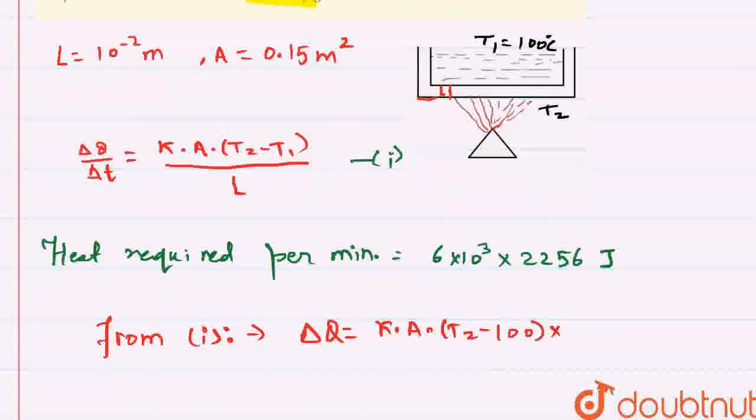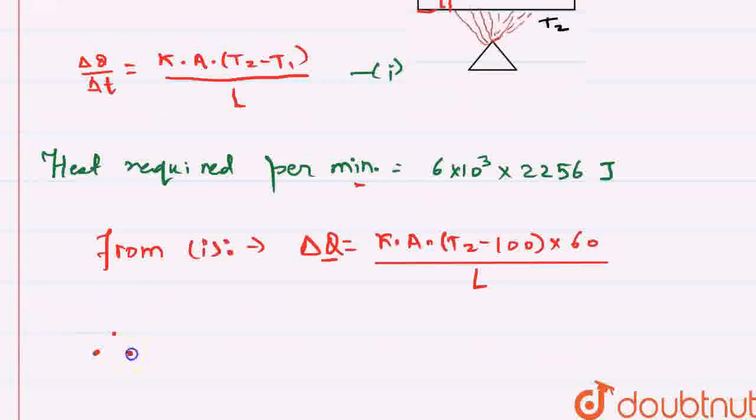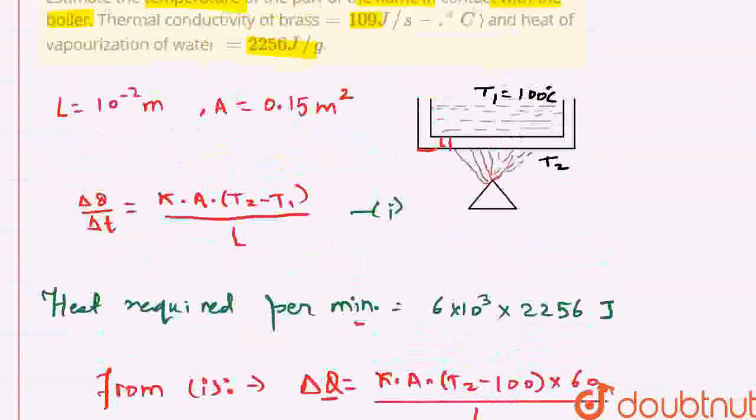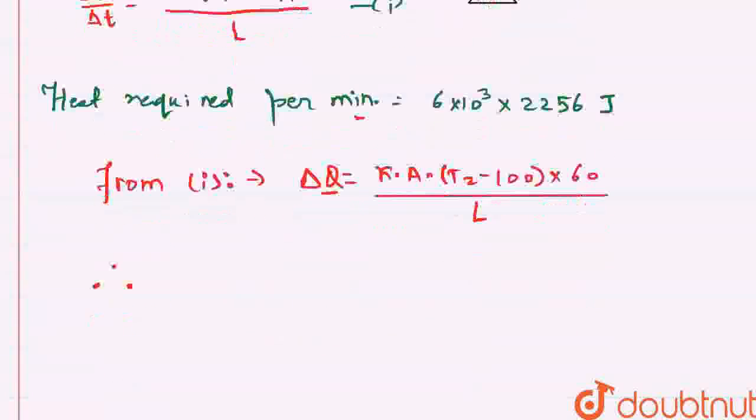100 into this delta T will go this side. And that will be in minute. So in one minute, there is 60 seconds, so this delta T will be 60. And this whole will be divided with the length of the conductor, that is L. And we'll equate this delta Q with the heat required per minute. Therefore, K was given here as 109.